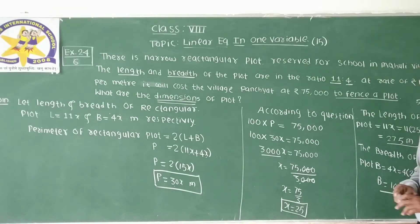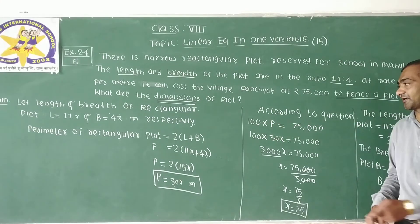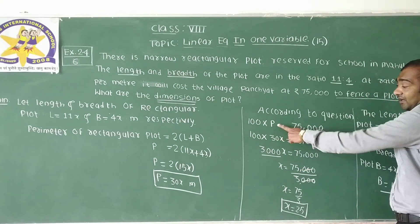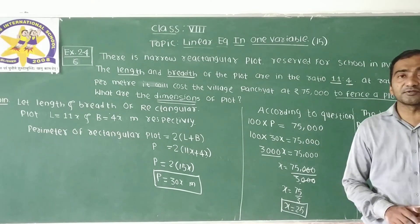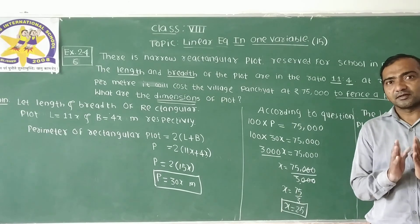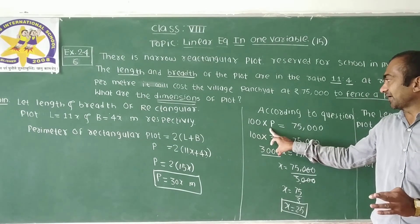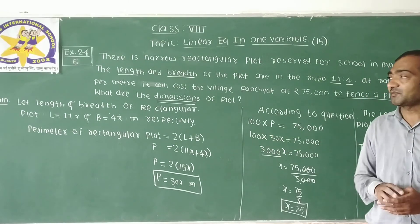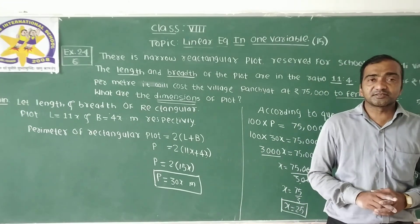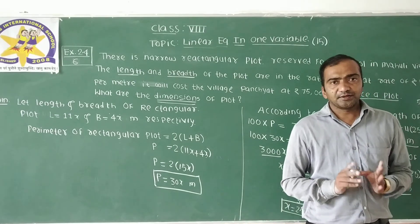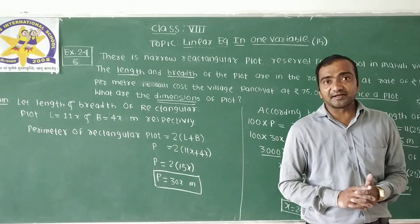In this question, the main condition is: rate of fencing (100 rupees per meter) multiplied by the perimeter equals the total cost of 75,000. That is how we find the dimensions. I hope you understand today's lecture — questions 5 and 6. In the next lecture we will take question number 7. If you have any difficulty, you can always ask me. I hope you have a great time. Bye.